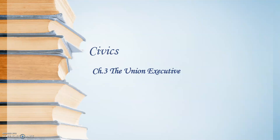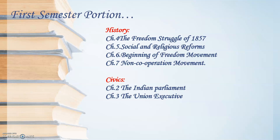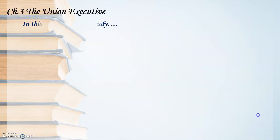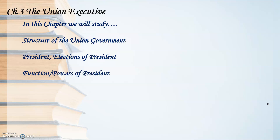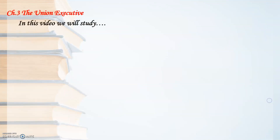This is the last chapter for the semester portion. In Chapter 3, the Union Executive, we will cover the following points: the structure of the union government, president, elections of president, functions and powers of president, prime minister and council of ministers, and how parliament keeps checks over council of ministers.